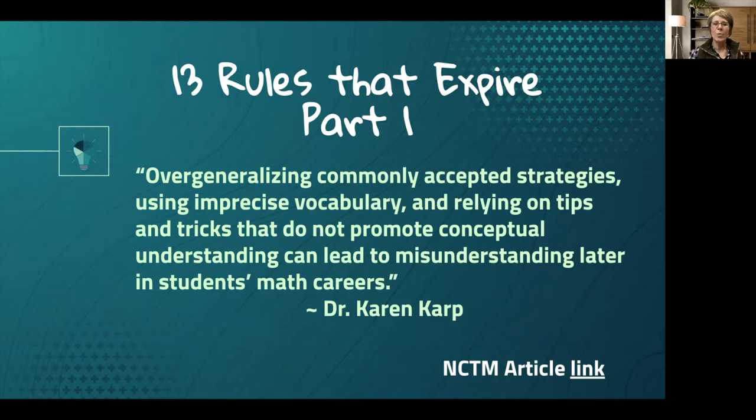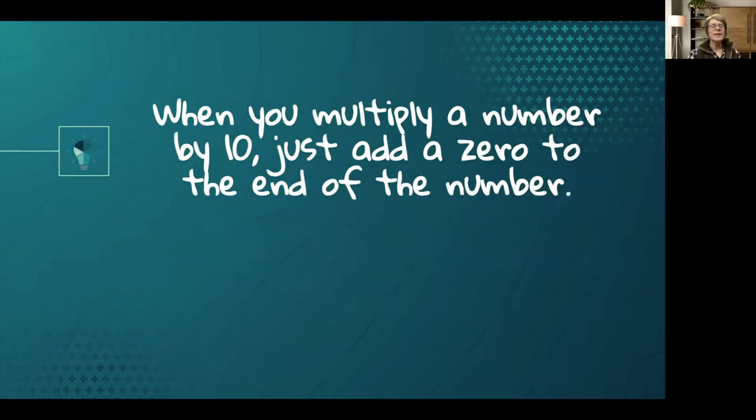So we are going to talk about one specific rule today, and I will address others in the future. The rule that I want to address is when you multiply a number by 10, just add a zero to the end of the number, or if you multiply it by 100, just add two zeros, which I know has probably come out of my mouth as well in working with students.